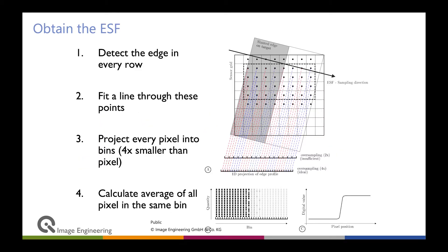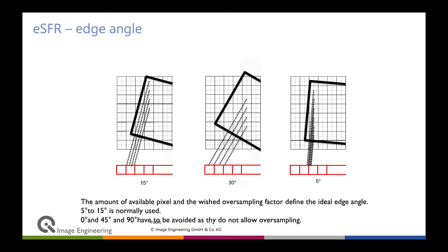The interesting and tricky part is how to obtain the edge spread function. An algorithm projects all pixels along the edge into bins that can be a quarter of a pixel in size, giving four times oversampling. First we detect the edge, then project all pixels into these bins. The angle of the edge defines how pixels are distributed across bins — it does work for many angles, but not zero or 90 degrees, as you would not be able to fill the bins. Also, 45 degrees can be a problem.